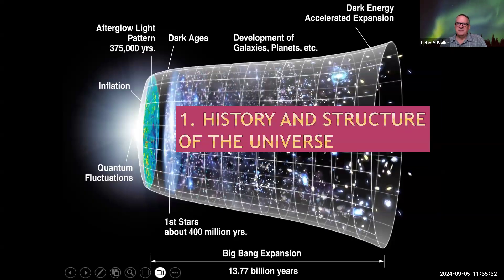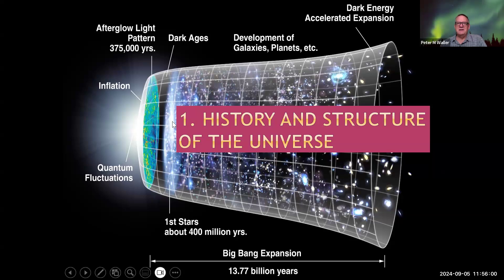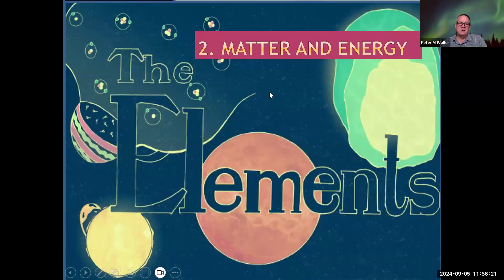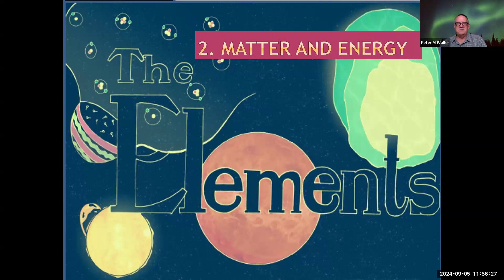Now let me go over the weekly topics. We start with the Big Bang and the formation of the universe over the last 14 billion years — talking about expansion forces, contraction forces, and how those remained in balance for 14 billion years, the period of inflation, and the quantum fluctuations. Then we'll talk about matter and energy, how matter first formed in the Big Bang, how the elements formed in stars, and how molecules formed in dark molecular clouds prior to the solar system.